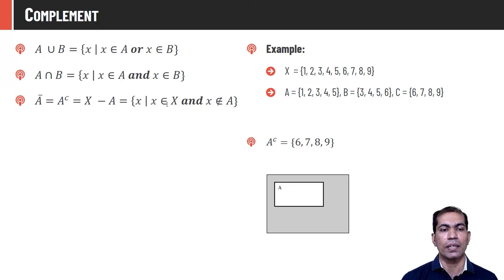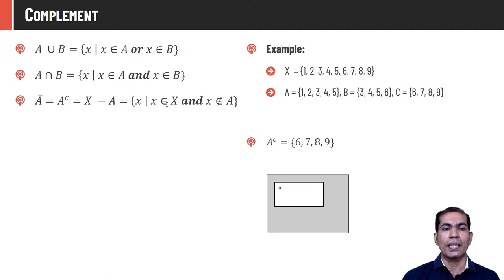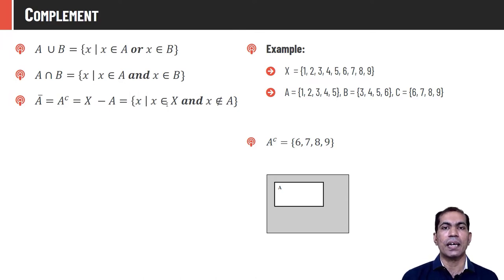Mathematically, Ā is the set of all elements x where x ∈ X but x ∉ A. For given set A = {1, 2, 3, 4, 5}, its complement is the remaining elements in X: {6, 7, 8, 9}. The graphical representation shows all the area outside A highlighted in gray, which is A complement. The difference or relative complement A − B is with respect to two crisp sets rather than the universal set.